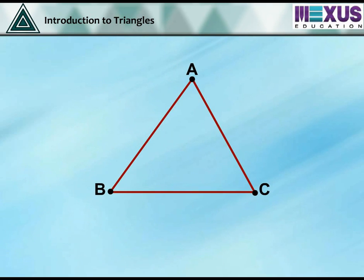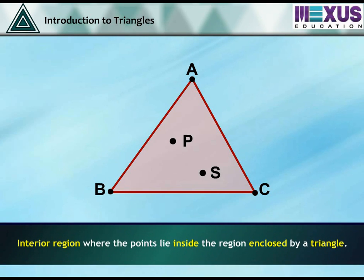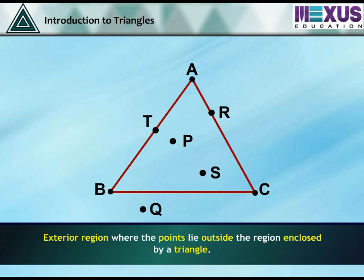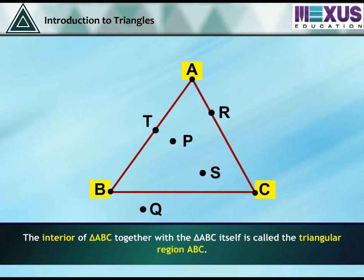In a triangle ABC, there are three parts. The interior region, where points lie inside the region enclosed by the triangle — the interior points are P and S. On the sides, where points lie on the sides of the triangle — on the sides are R and T. The exterior region, where points lie outside the triangle — the exterior point is Q. The interior of triangle ABC together with triangle ABC itself is called the triangular region ABC.